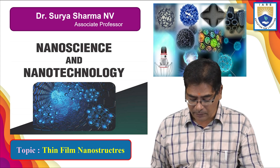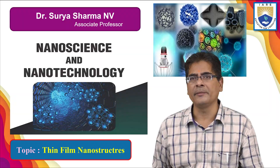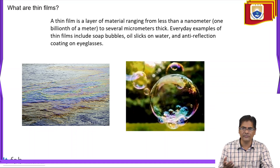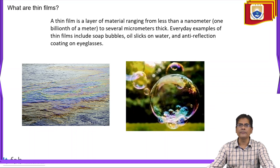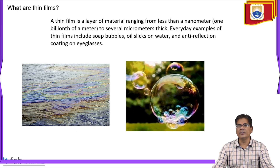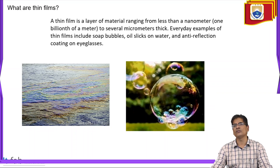In today's lecture, we will see how thin film nanostructures are fabricated. A thin film is a layer of material ranging from less than a nanometer — one billionth of a meter — to several micrometers thick. Everyday examples of thin films include soap bubbles, oil slicks on water, and anti-reflection coatings on eyeglasses.